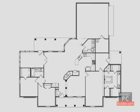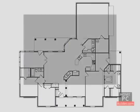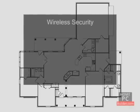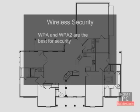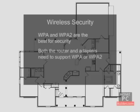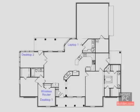Since the data is going through the air, you need to consider security. Look for the WPA or WPA2 security specification on both the wireless adapter and wireless router. Enabling either of these modes on both the adapter and the router, along with a strong encryption key, will make sure your network and all your data is secured from others who may try to access your network without your permission.